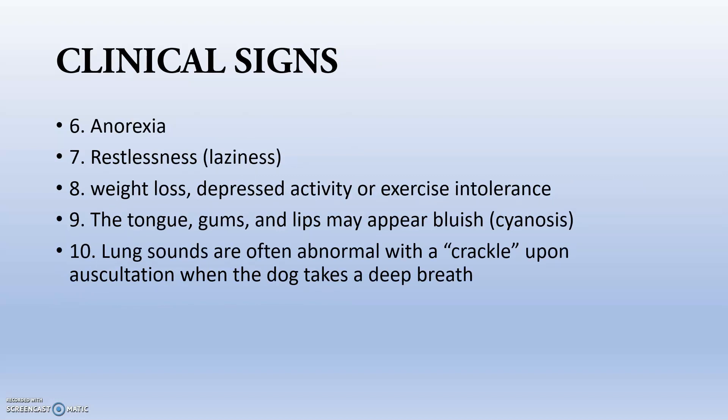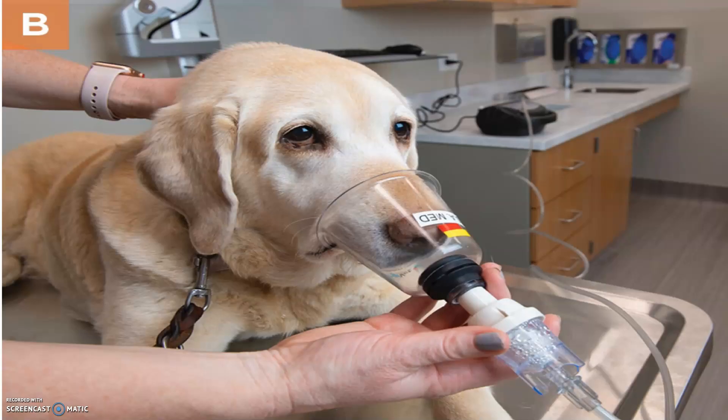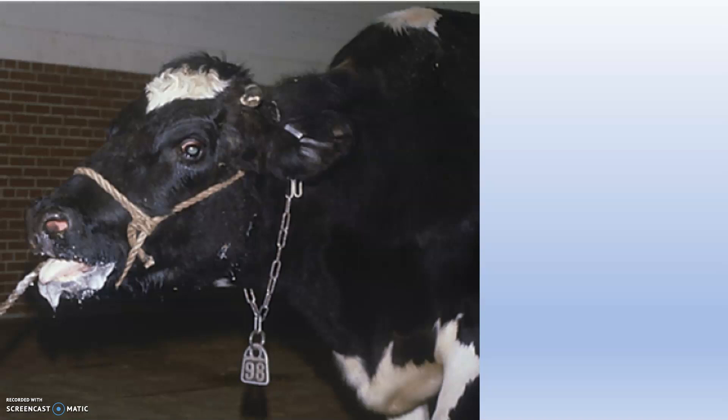Anorexia is present and the animal will not feed properly. Restlessness, weight loss, and exercise intolerance will occur. Sometimes the tongue, gums, and lips may appear bluish due to cyanosis. Lung sounds are often abnormal and crackled on auscultation. The animal will be very depressed, and nebulization with bronchodilators can be beneficial. Drooling saliva and improper feeding can worsen the animal's condition, making it prone to external parasites.